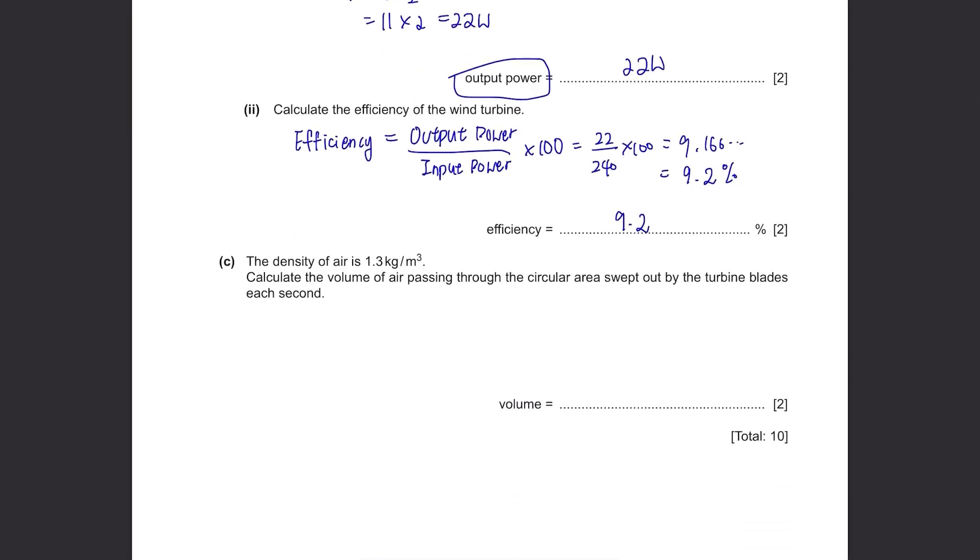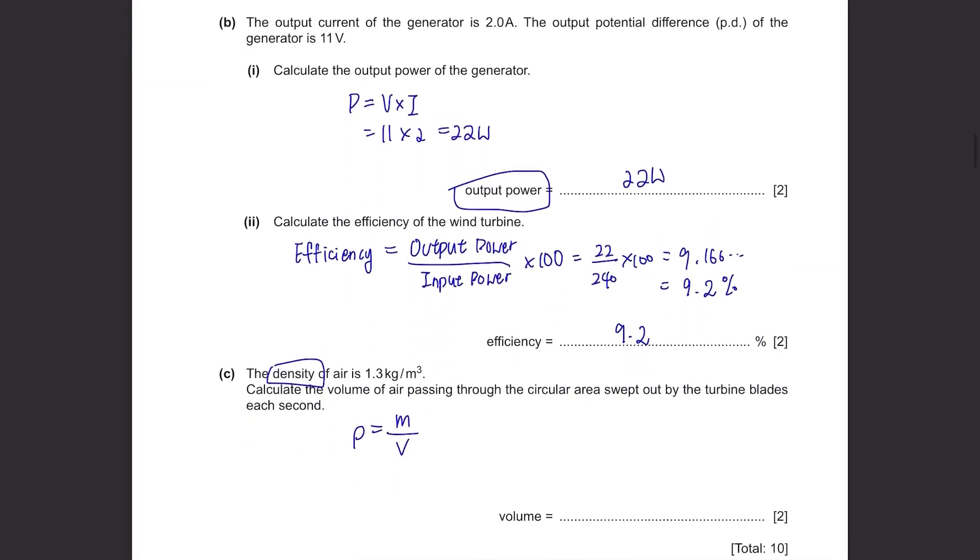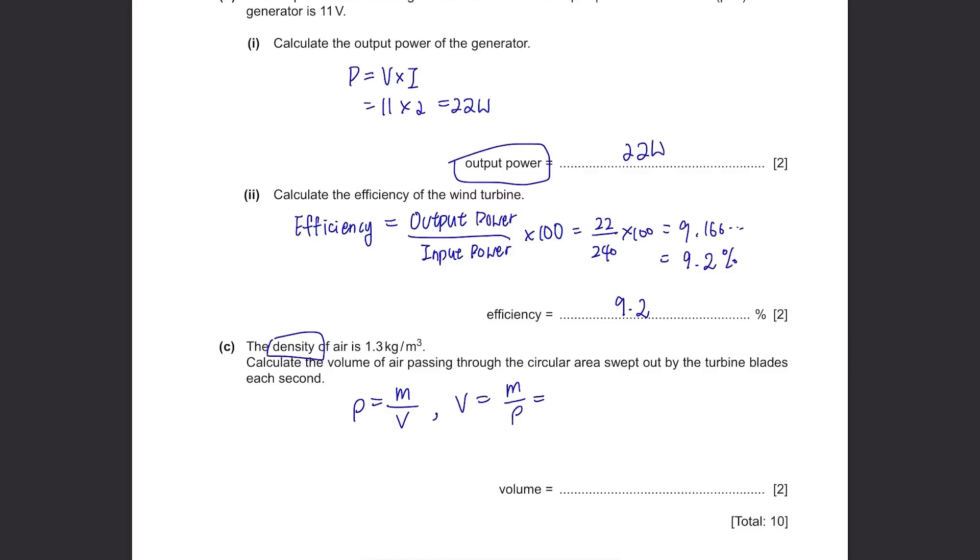Part C. The density of air is 1.3 kilograms per meter cubed. Calculate the volume of air passing through the circular area swept out by the turbine blades each second. You really have to be familiar with all the formulas because they're using this formula and that formula and keep moving back and forth. Density equals mass over volume. We're given with the density and the mass was here 7.5. And we need to find the volume. So volume equals mass over density, which is 7.5 divided by 1.3. So round it up to 2 significant figures, it's 5.8. I cannot stress this enough. You must write all the formulas that you're using because one mark is allocated for each formula. So even if your answer is correct, if you didn't write your formula, they're still going to deduct one mark.